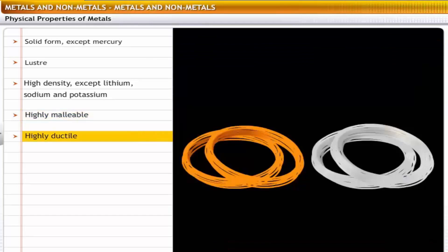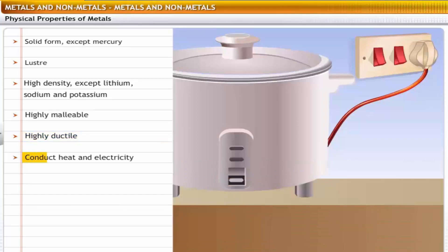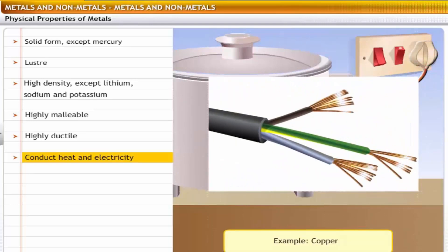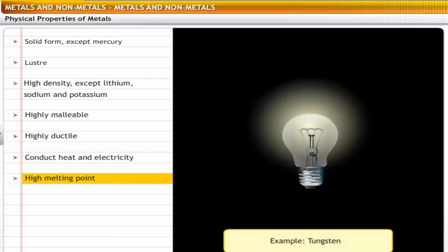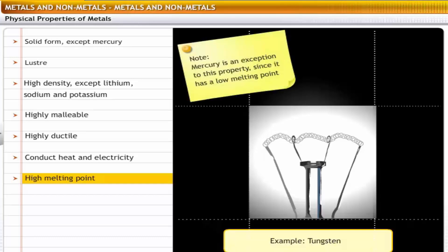Metals are highly ductile and can be drawn into wires. For example, copper and silver can be drawn into thin wires. Metals are good conductors of heat and electricity — copper wires are commonly used in electrical cables because of this property. Metals have high melting points. For example, tungsten has a high melting point, which is why it is used in bulb filaments. Mercury is an exception since it has a low melting point.